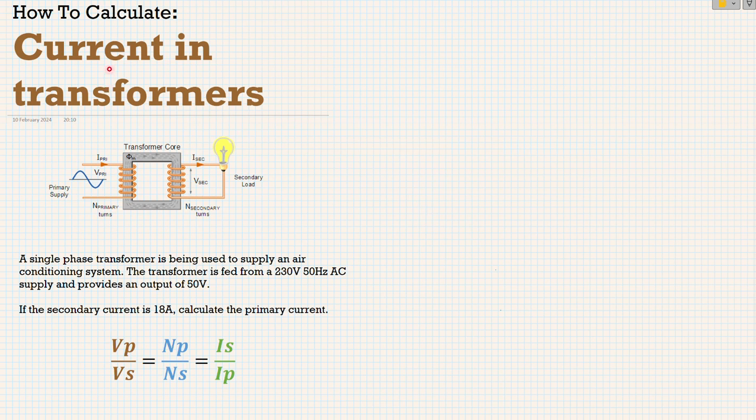Let's have a look at calculating current in transformers. We've learned in the first video how to transpose a formula. We've had a look at number of turns. Let's have a look at some current now.